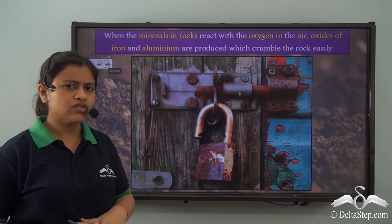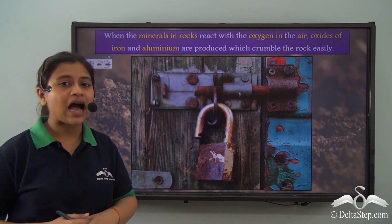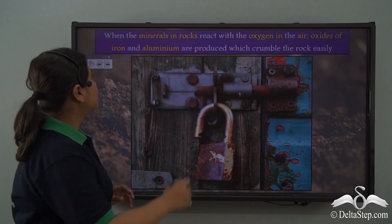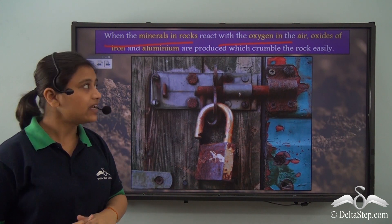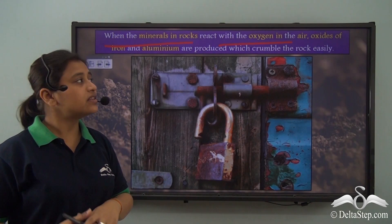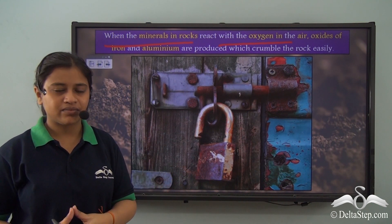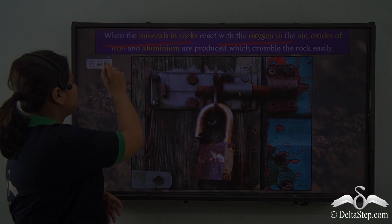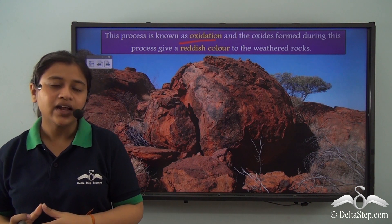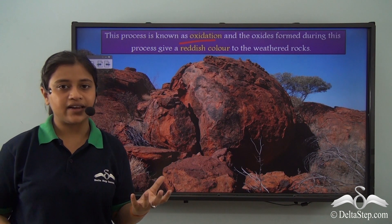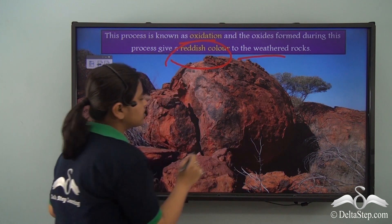You must have noticed locks on doors that get eventually covered with a reddish crumbling material. When minerals in rocks — especially iron compounds — react with oxygen in the air, oxides of iron and aluminium are produced. These tend to crumble the rock easily. These oxides of iron and aluminium are seen as a browny material known as rust, and this process is called oxidation. Oxidation is a process in which compounds of iron, on coming in contact with oxygen in the air, produce oxides of iron and aluminium that weather away the rocks. The oxides formed give a reddish colour to the weathered rocks.